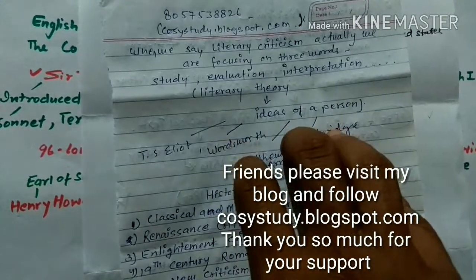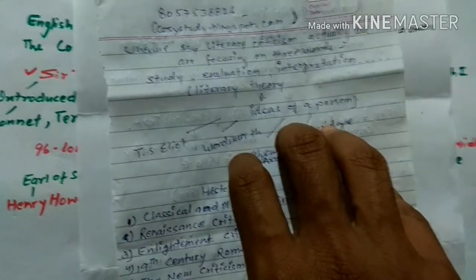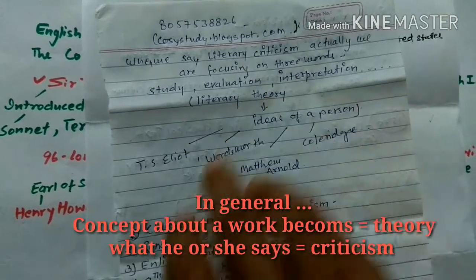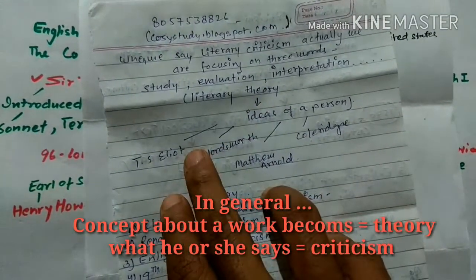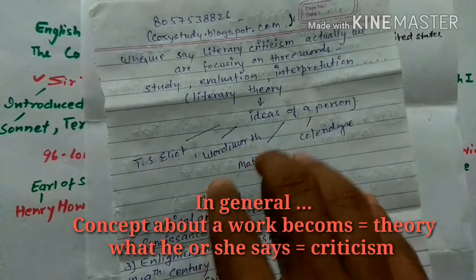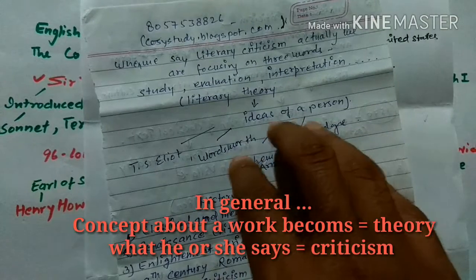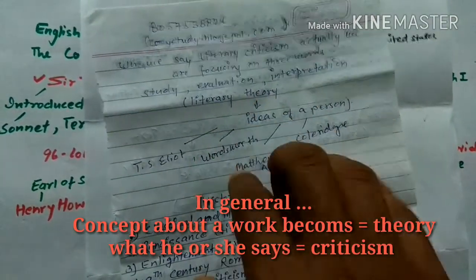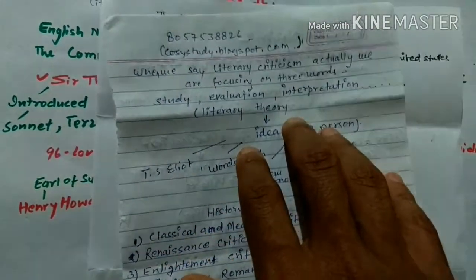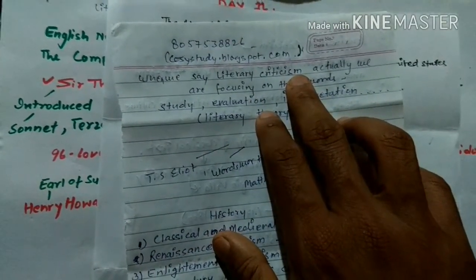Literary theory is a concept or an idea of a person about a work — about poetry, about a novel, or about something else. Whatever Wordsworth says about poetry becomes his theory, and whatever T.S. Eliot says becomes his theory. Whatever these people say about literary theory becomes their theory. But the way they study, evaluate, and interpret — that process is called criticism.